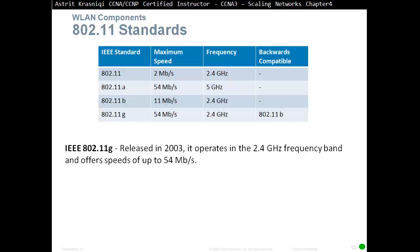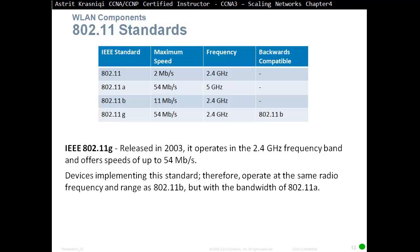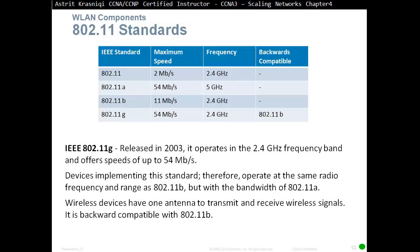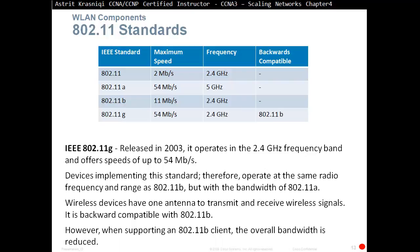802.11g was released in 2003. It operated at 2.4 GHz — the same frequency as 802.11b — but offered speeds up to 54 Mbps, matching 802.11a. So it combined the range of 802.11b with the bandwidth of 802.11a. Wireless devices have one antenna to transmit and receive wireless signals. It is backward compatible with 802.11b, however when supporting 802.11b clients the overall bandwidth is reduced.